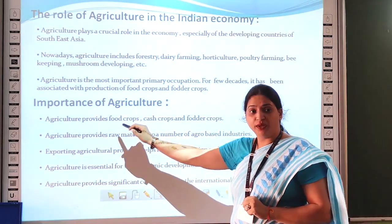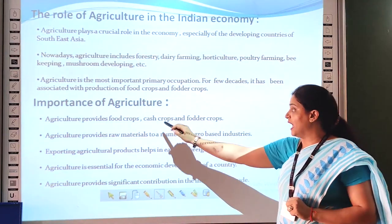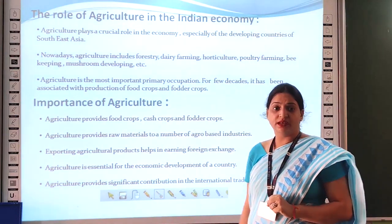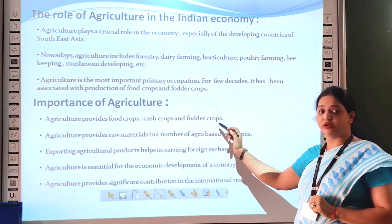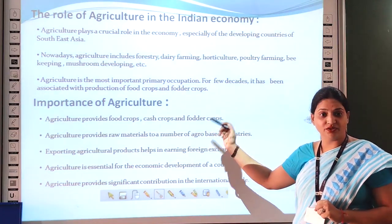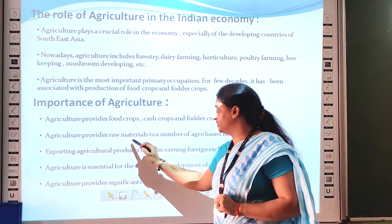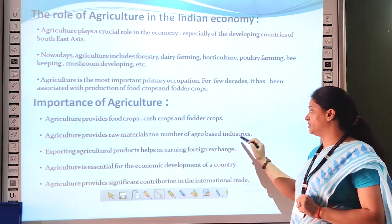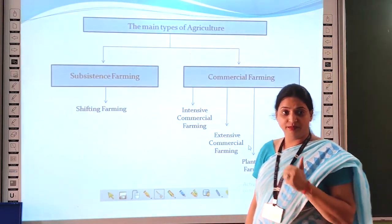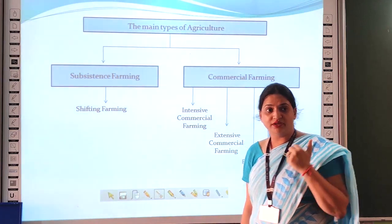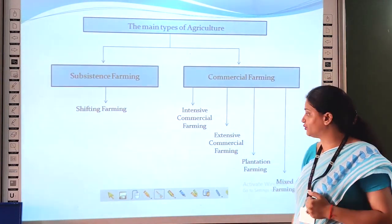Food crops include wheat, rice, etc. Cash crops include cotton, jute, etc. And product crops include maize and others. Agriculture provides raw materials to a number of agro-based industries like cotton industries, textile industries, and silk industries.